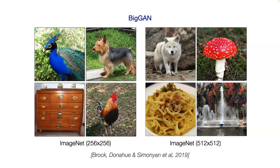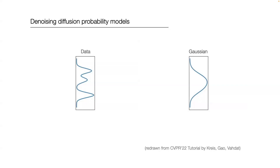GANs had really taken off and were the model of choice for some time. But in the last two or three years, diffusion models have largely unseated GANs as the model of choice for images, video, audio, speech, music, and so on. Like other generative models — variational autoencoders and GANs — the underlying idea is to learn to transform a tractable distribution we can sample from, like a normal distribution, into a target empirical distribution, which is typically very complex.